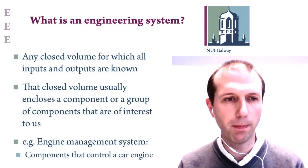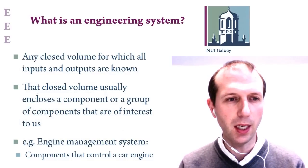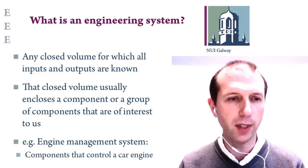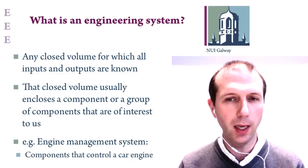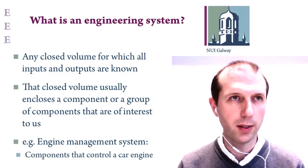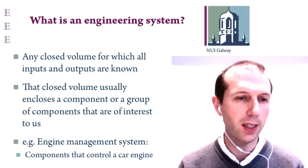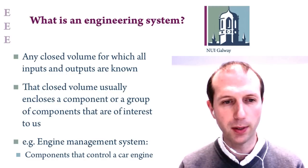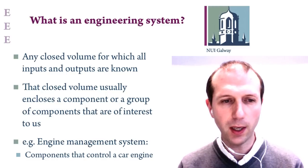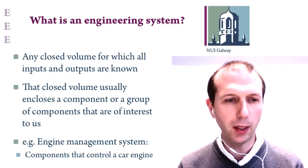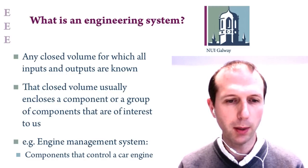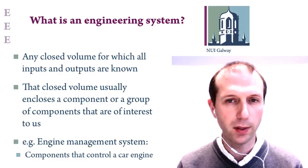So what's an engineering system? You can think of it as a closed volume for which all of the inputs and outputs are known — like a box where you know what's going in, what's coming out, and you have some understanding of what is inside that box and how it transforms a particular set of inputs into a particular set of outputs. That closed volume usually includes some components or multiple components that we ultimately have to understand and design.